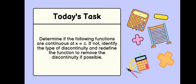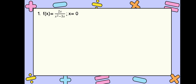Let's start! Number 1: we have to check if our function 2x over x squared minus 3x is continuous at x equals 0. If not, we are to identify what type of discontinuity it is and redefine if possible.